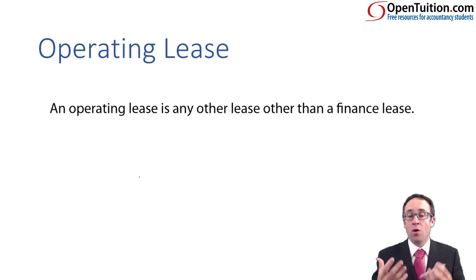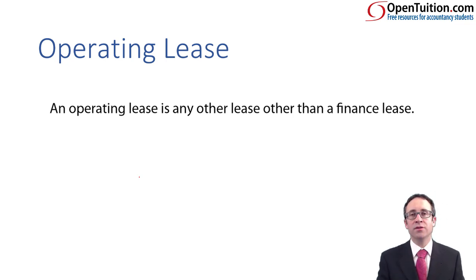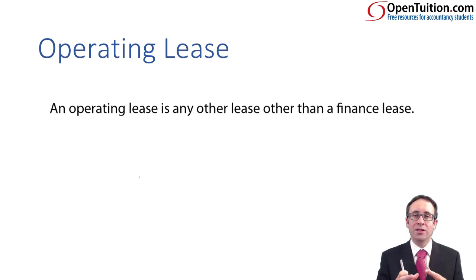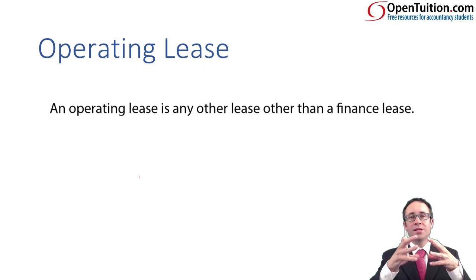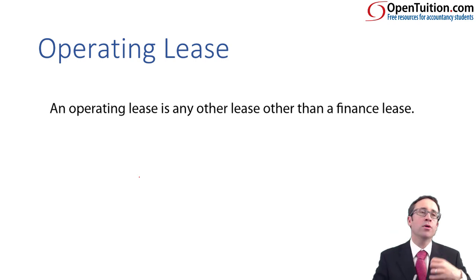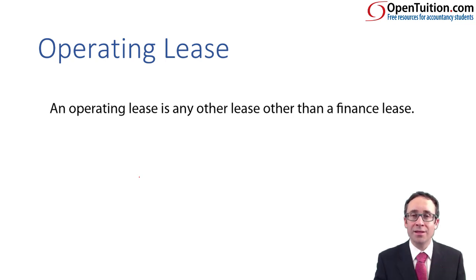An operating lease is any lease other than a finance lease. Effectively, the risks and rewards have not been transferred to the lessee — they remain with the lessor. From an accounting perspective, if you have the risks and rewards, you still control the asset. So you continue to recognise the asset in your books and continue to depreciate it. The money you receive is rental income, and we will expense that straight-line over the life of the lease.